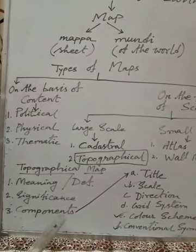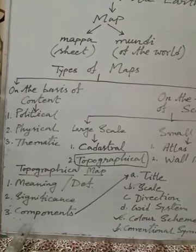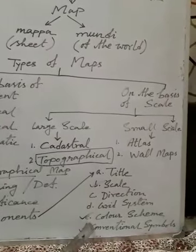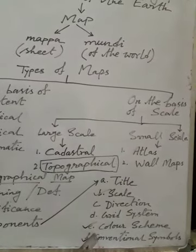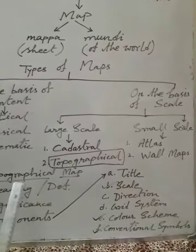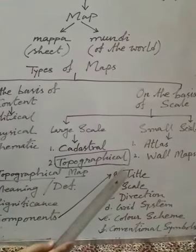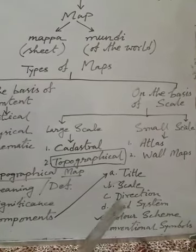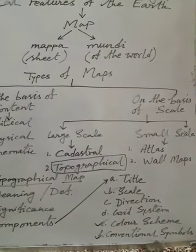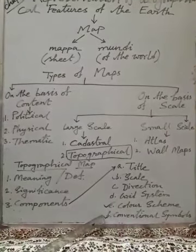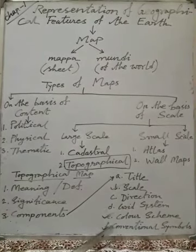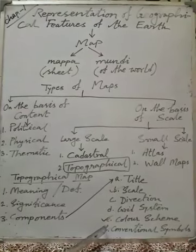Components means the language of a map — through components we can describe and understand any type of map, especially a topo map. The components important for topo map are: (a) title, (b) scale, (c) direction, (d) grid system, (e) color scheme, and (f) conventional symbols. We will discuss only scale, color scheme, and conventional symbols, as only these three are in our syllabus.